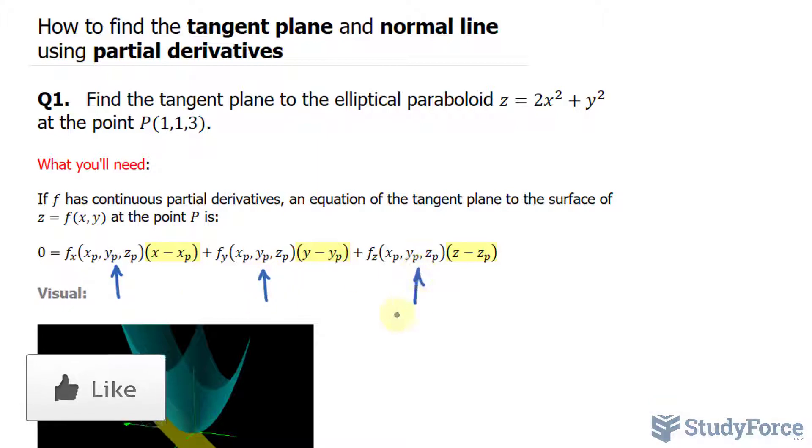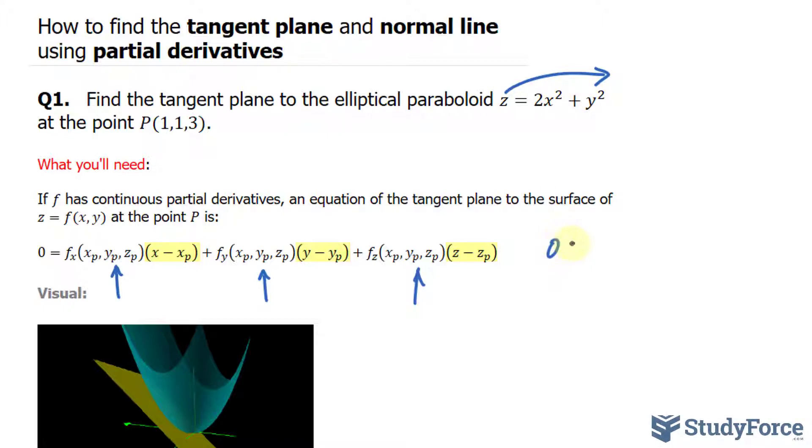Let's start by finding f sub x, or the partial derivative of the function with respect to x, and I'll bring this variable z over to the right side. So my function is 0 equals 2x squared plus y squared minus z. Now I'll find the partial derivative: f sub x equals 4x. This term and this term are constants, they become 0.